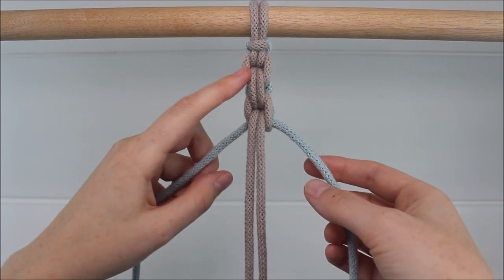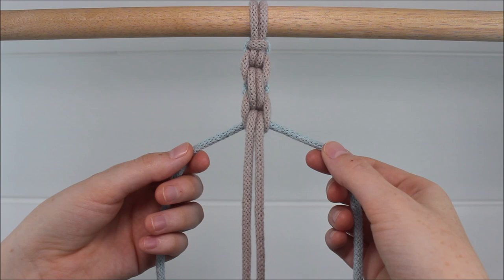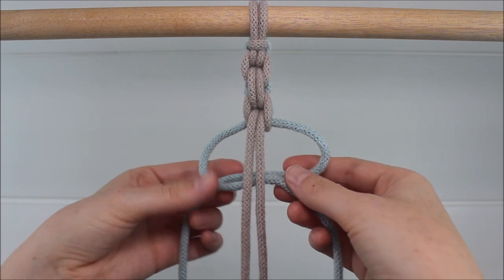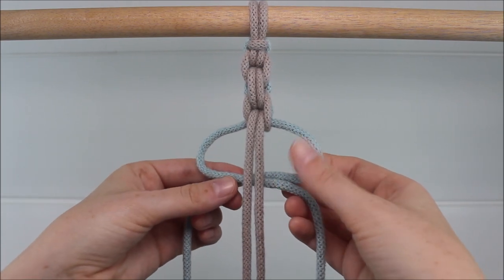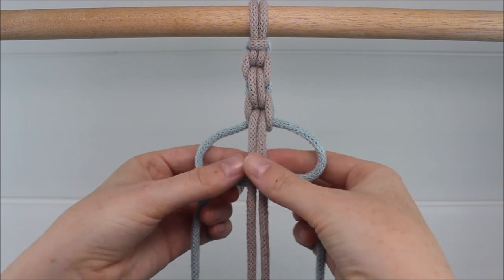As you tie this pattern, it will start to look like links on a chain. And all you do is just repeat the same steps over and over again, alternating between going through the left and the right loop and through the center.